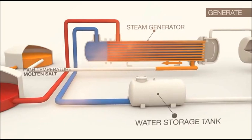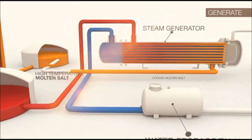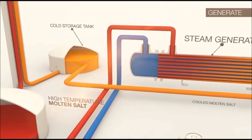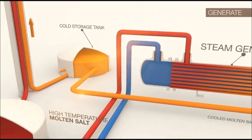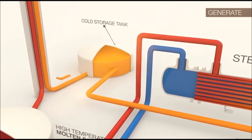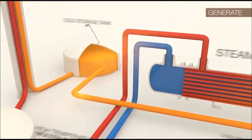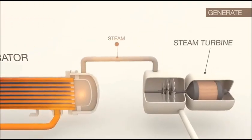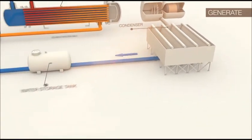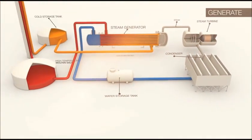Once the hot salt is used to create steam, the cool molten salt is piped back into the cold salt storage tank where it flows back up the receiver to be reheated as the process continues. After the steam is used to drive a steam turbine, it is condensed back to water and returned to the water holding tank where it flows back into the steam generator when needed.